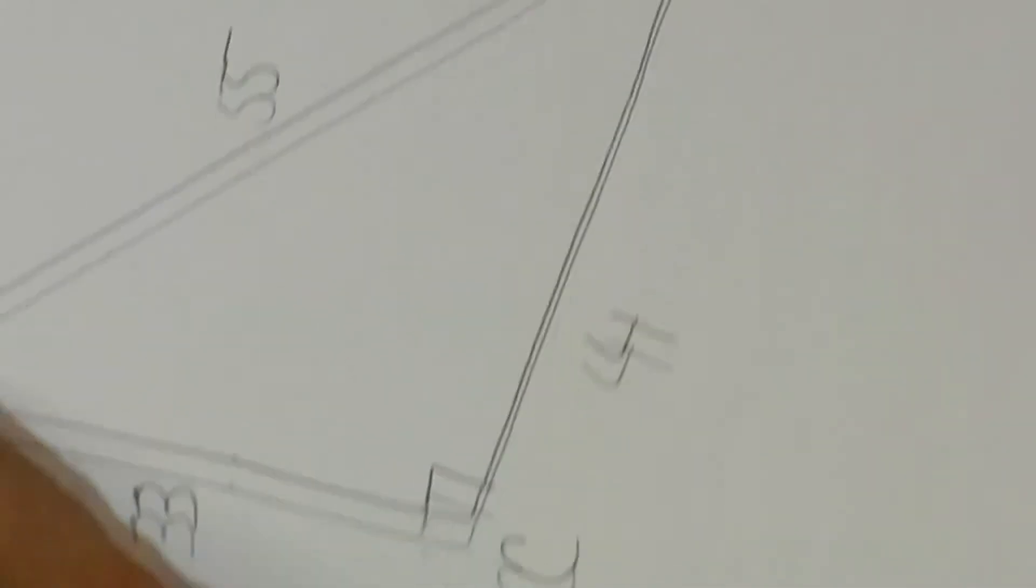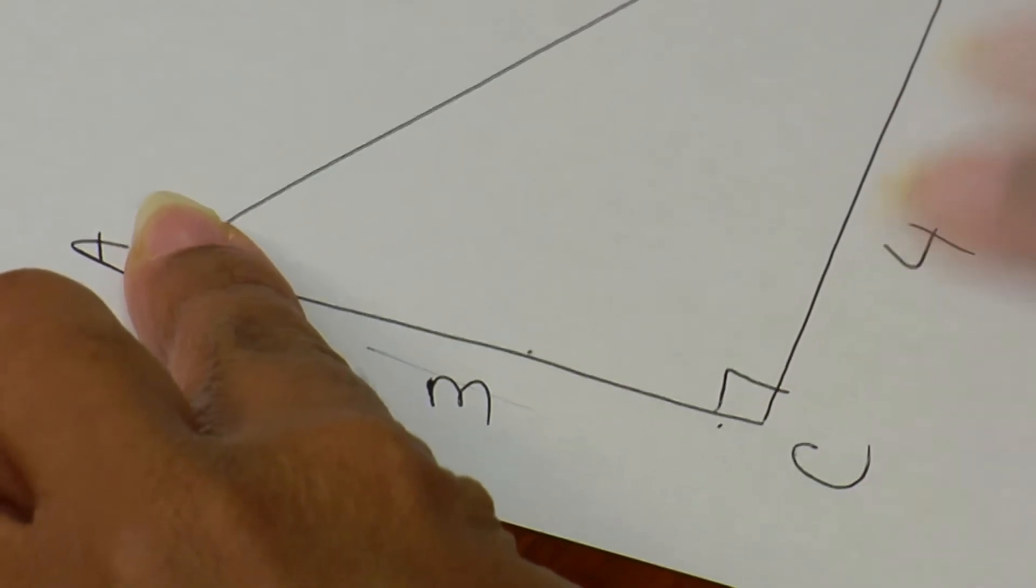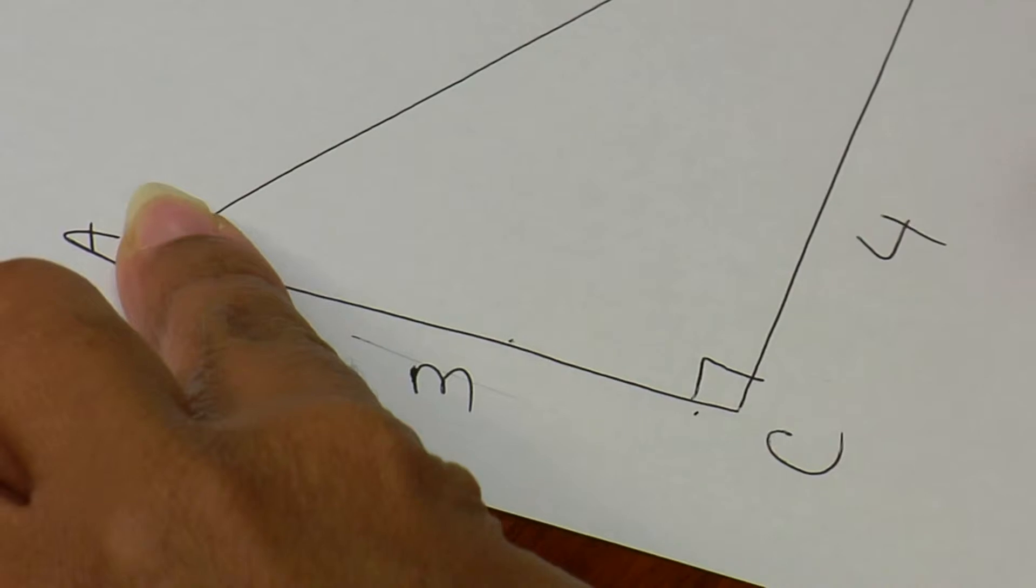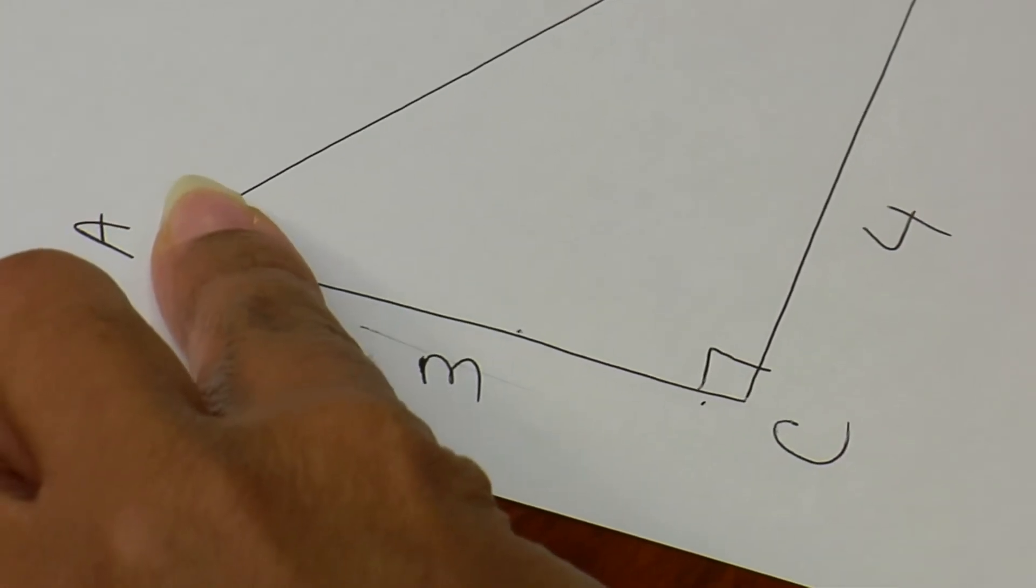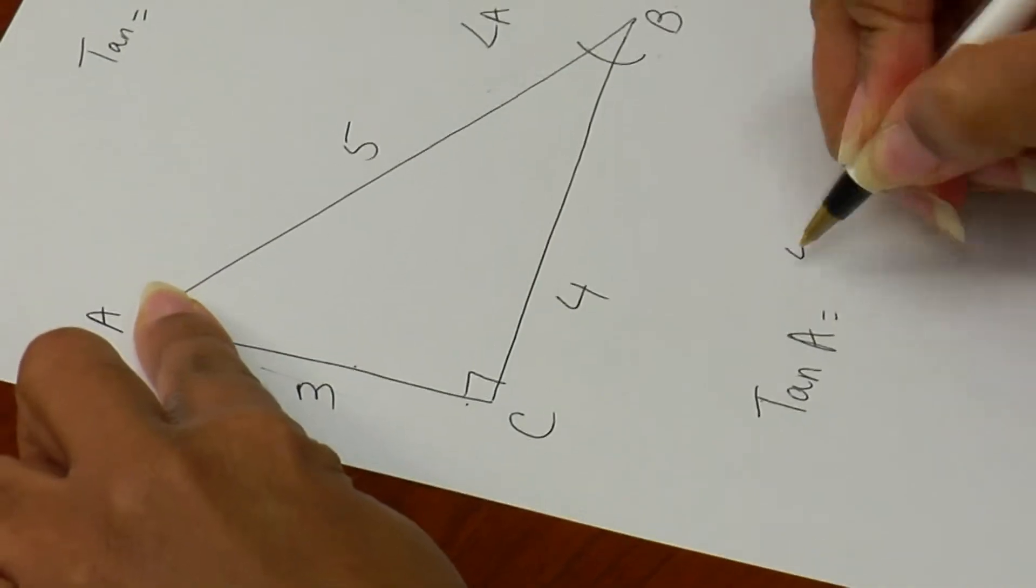For this, for angle A this time, the opposite leg is now side BC, which is 4 here. So for angle B, for angle A, it is 4 over 3.